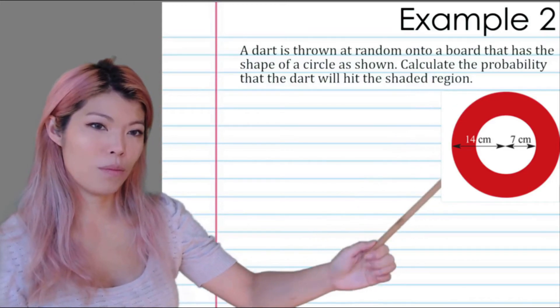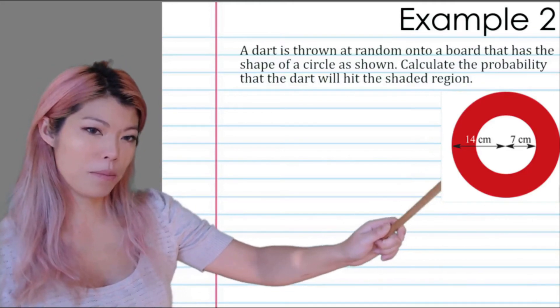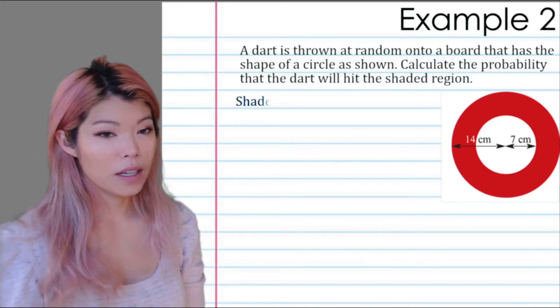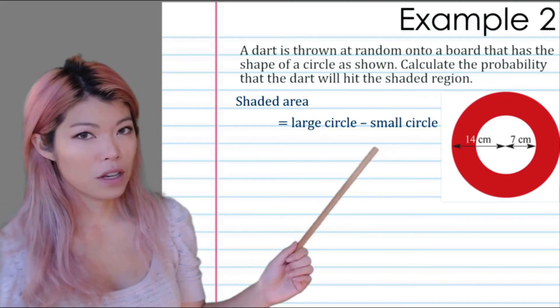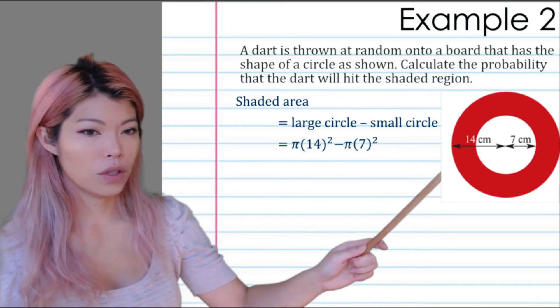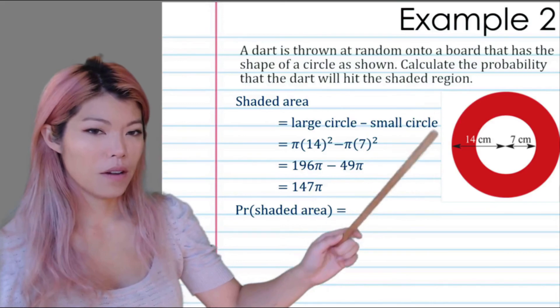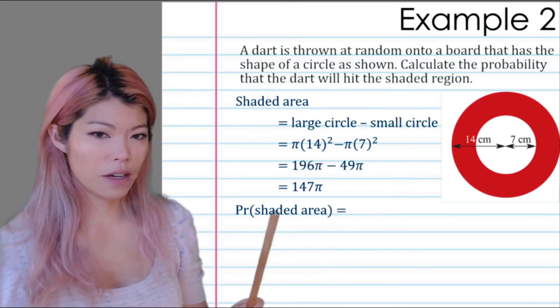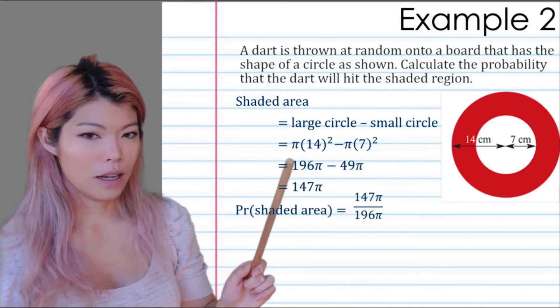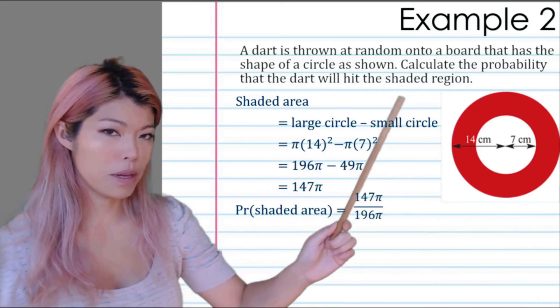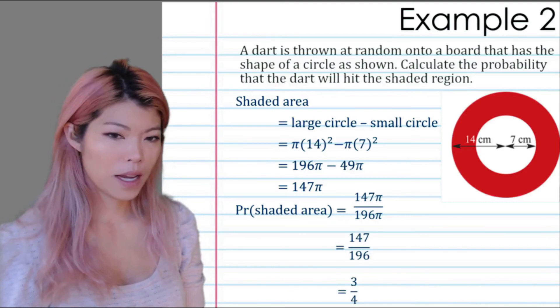Example 2: A dart is thrown at random onto a board that has the shape of a circle as shown. Calculate the probability that the dart will hit the shaded region. What we want is the red part, and the whole area is what we could throw the dart to. The shaded area is large circle minus the smaller circle. The area of a circle is π r². For the large one, r is 14; for the little one, r is 7. We can simplify that to get 147π. The probability of the shaded area is that over the total area. The total area was 14² π or 196π, the area of the bigger circle. So the area of shaded over the area of the whole circle. If you put that in a calculator, we obtain three quarters.